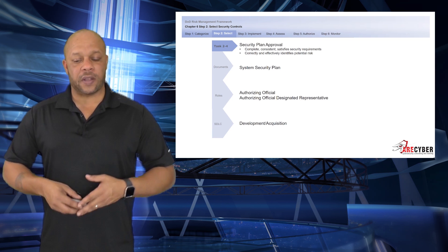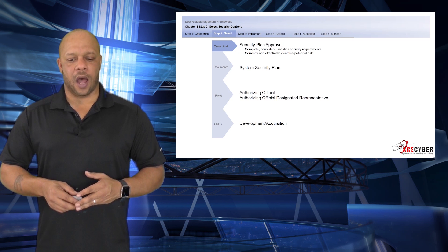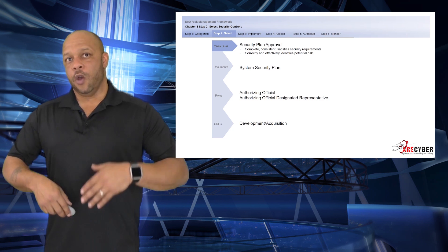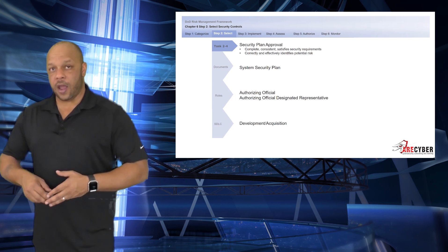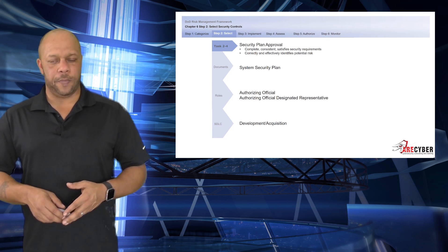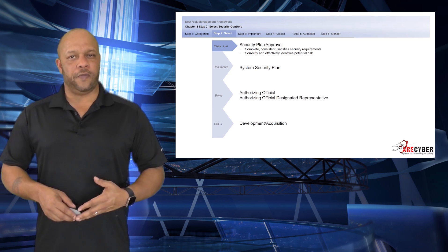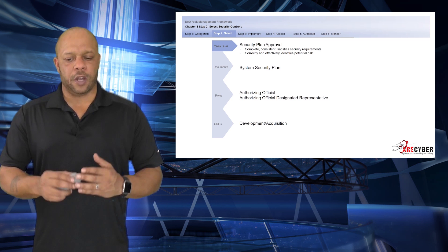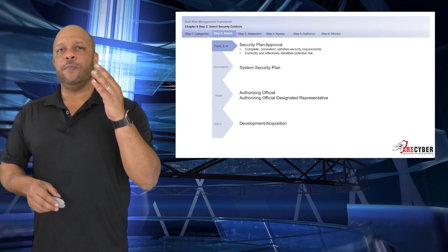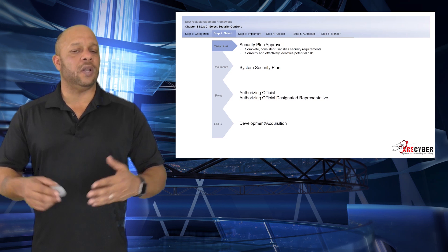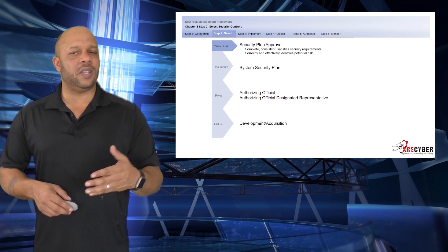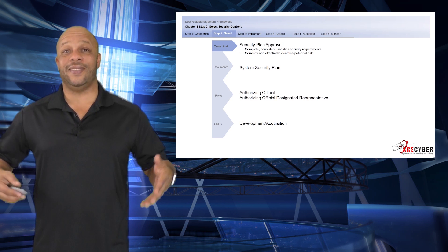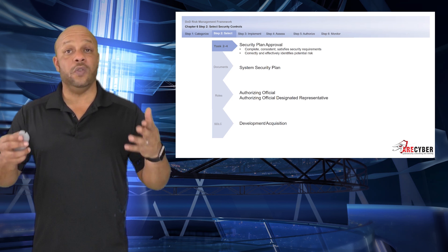Finally, once we've selected our baseline, tailored our baseline, and begun to develop at least a draft continuous monitoring plan, it's time to seek approval. At this point, we will finalize the system security plan and send it forward to the authorizing official or their representative for final approval. For most components, only at this step can you even begin to start soliciting for a validator to come visit the system. Technically, until this step is complete and the system security plan is signed, the system and the controls do not exist.